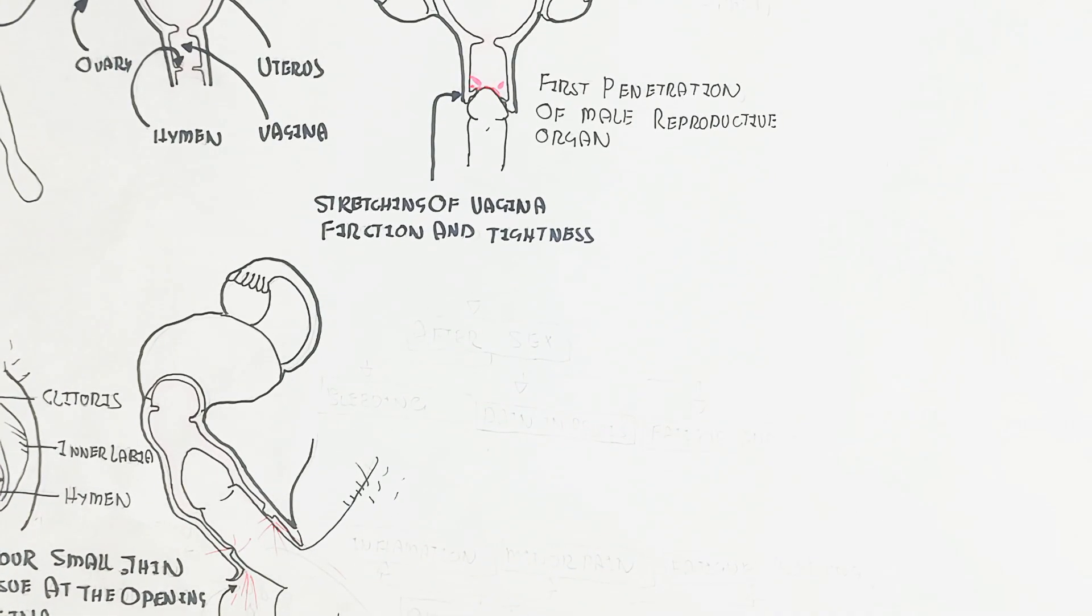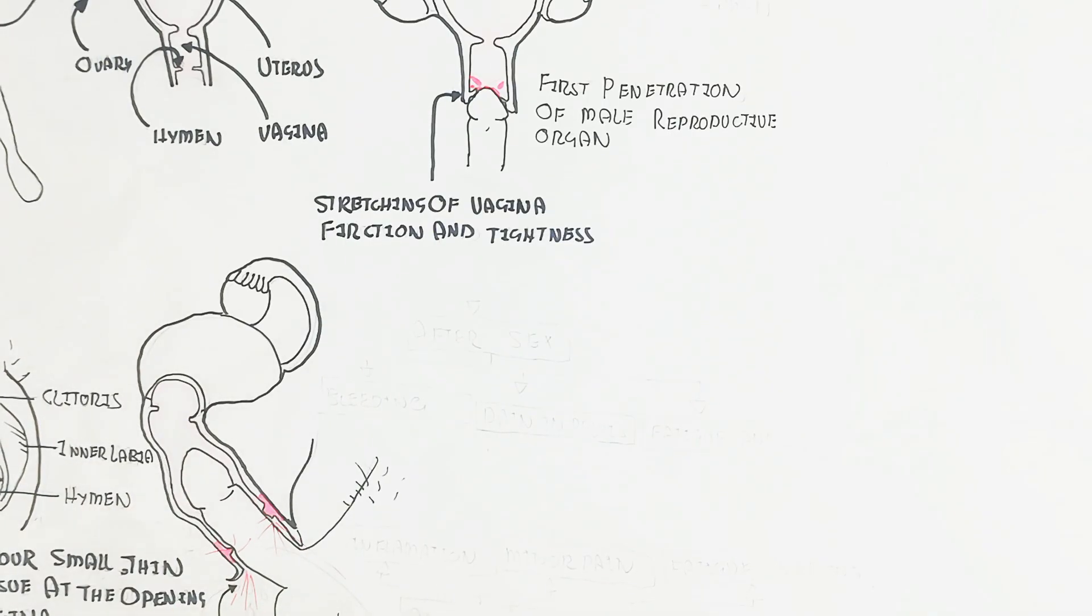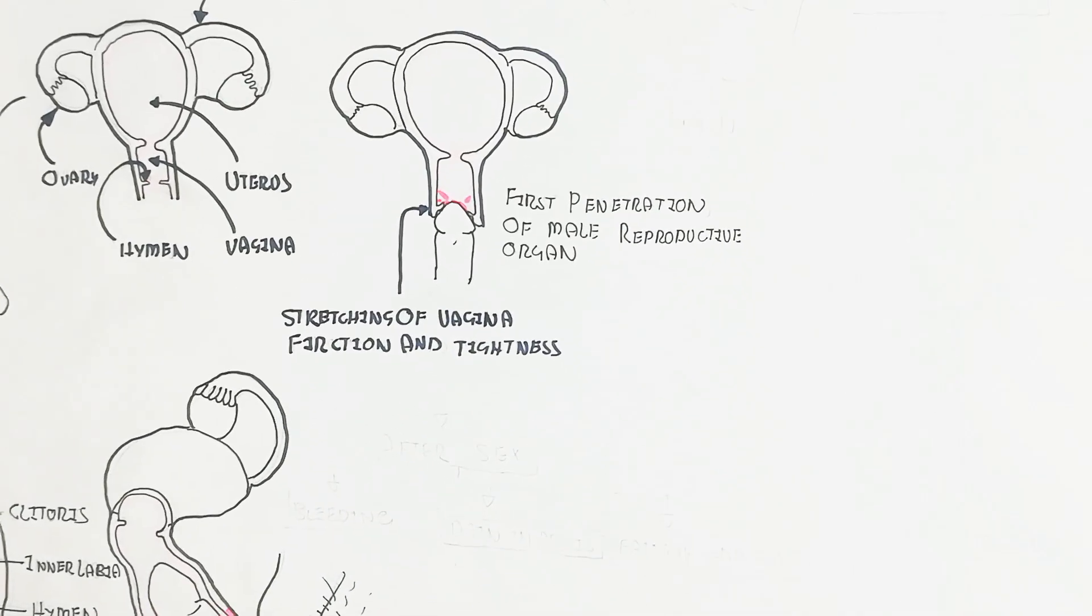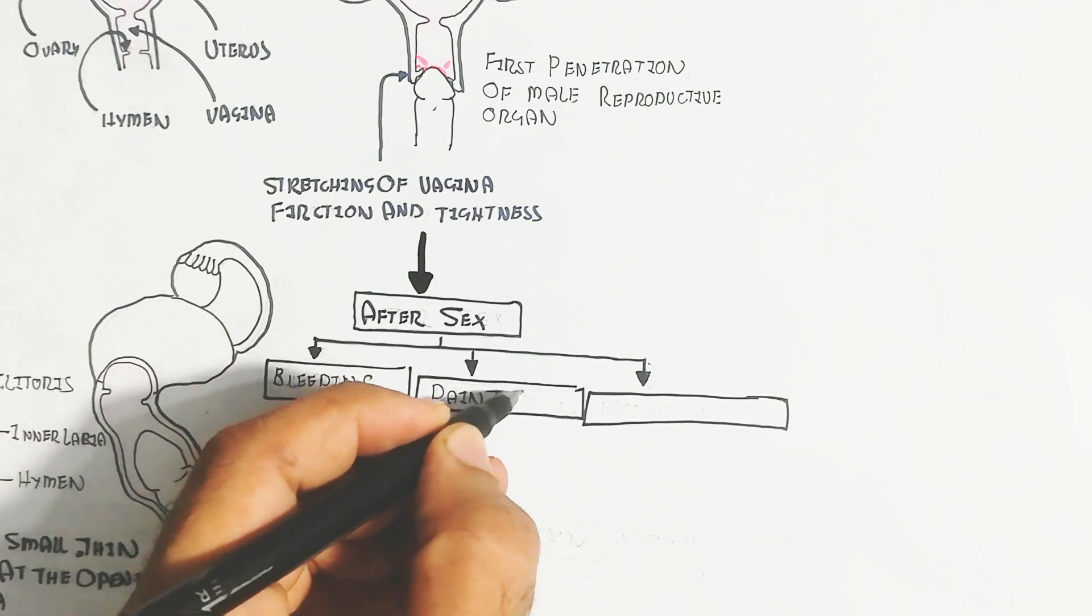This is the female reproductive system and male reproductive system. In this way, the hymen will rupture. First intercourse will cause bleeding. That bleeding will show the sign of rupturing of the hymen, known as virginity loss.